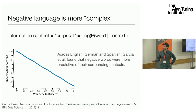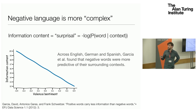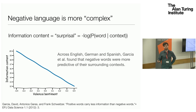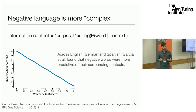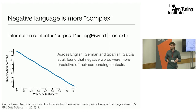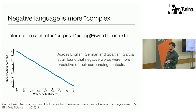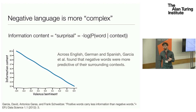Another interesting aspect related to negative language being more differentiated is that negative language can be seen as being a bit more complex — complex in the mathematical sense that when you see a negative word, it tells you more information about its context. David Garcia and his group looked at how much, if you see a word, it helps you predict the other words that occur in the surrounding context. You can use this to compute the information content of a word, and they found, across three different languages, a consistent trend where negative words were a lot more informative about their context — they carried a lot more information.